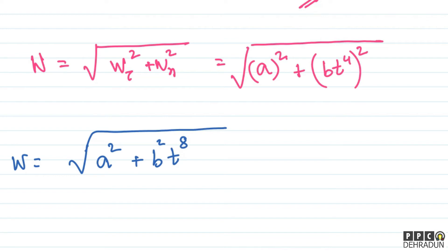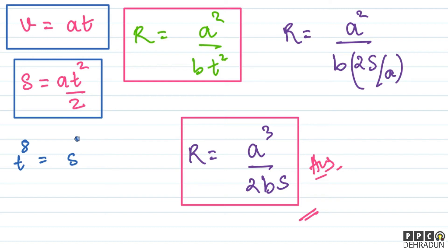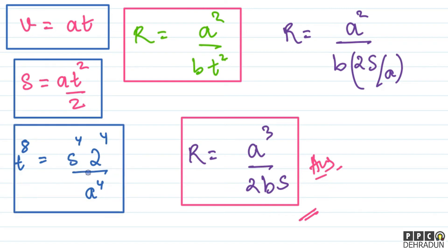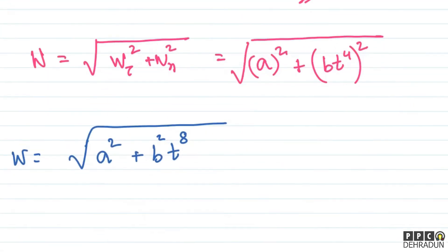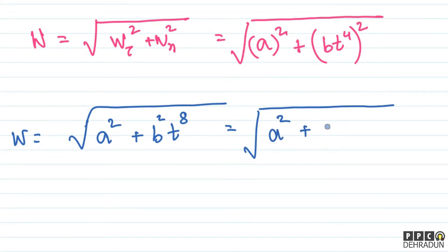Now we need to convert t⁸ into distance s. From s = at²/2 we get t² = 2s/a. Taking this to the power 4: t⁸ = (2s/a)⁴ = 2⁴s⁴/a⁴ = 16s⁴/a⁴. So w = √(a² + b² · 16s⁴/a⁴).